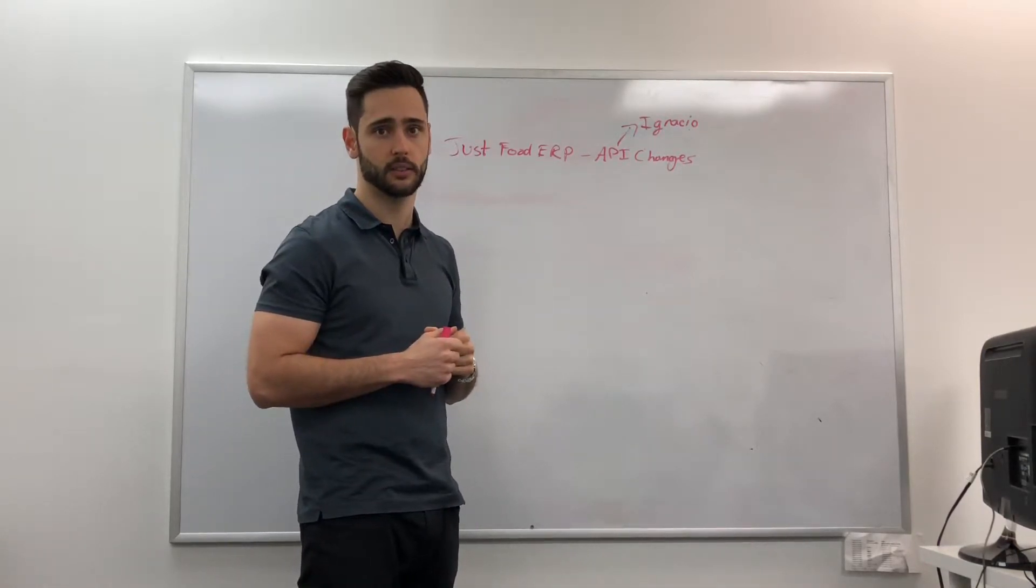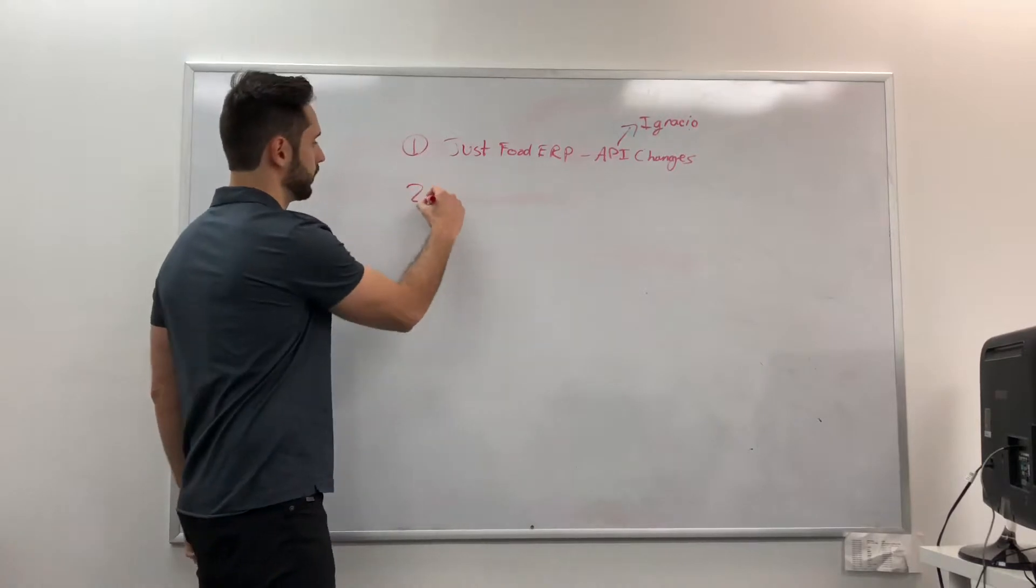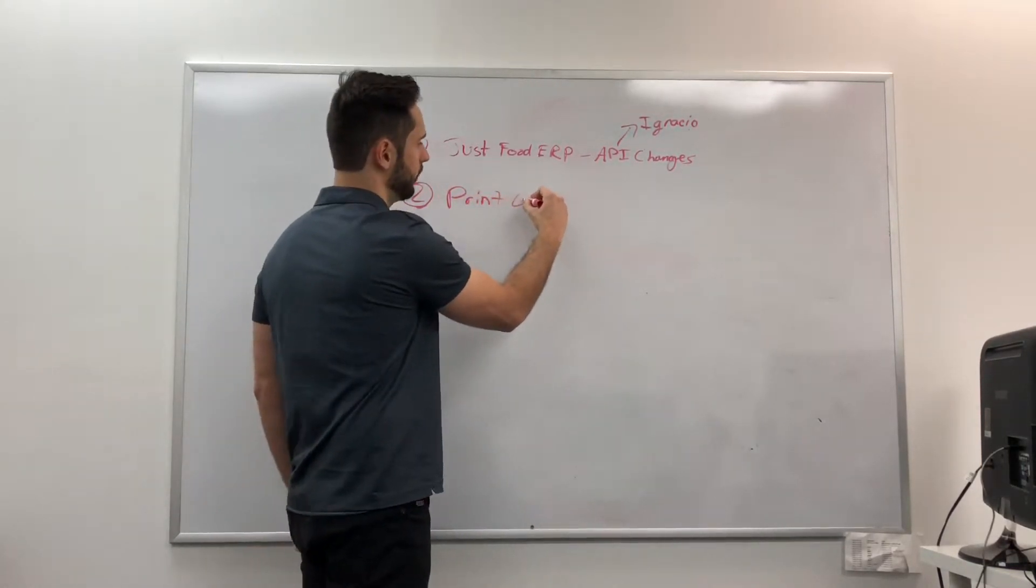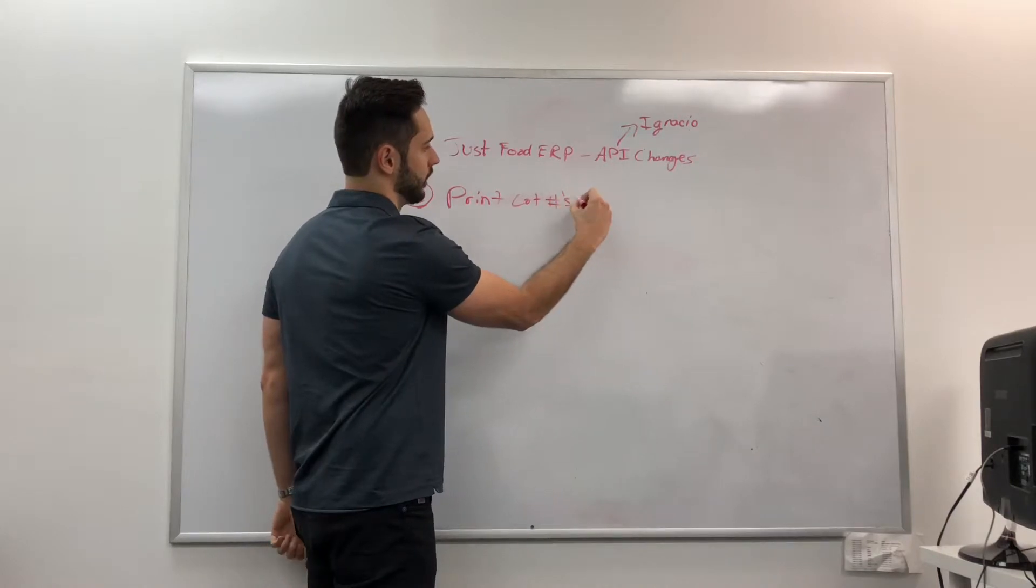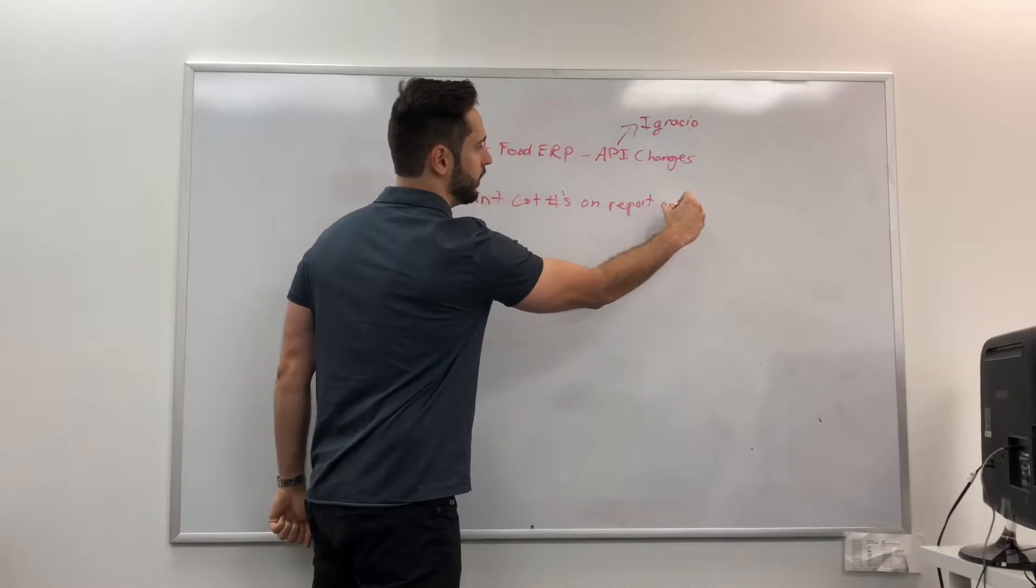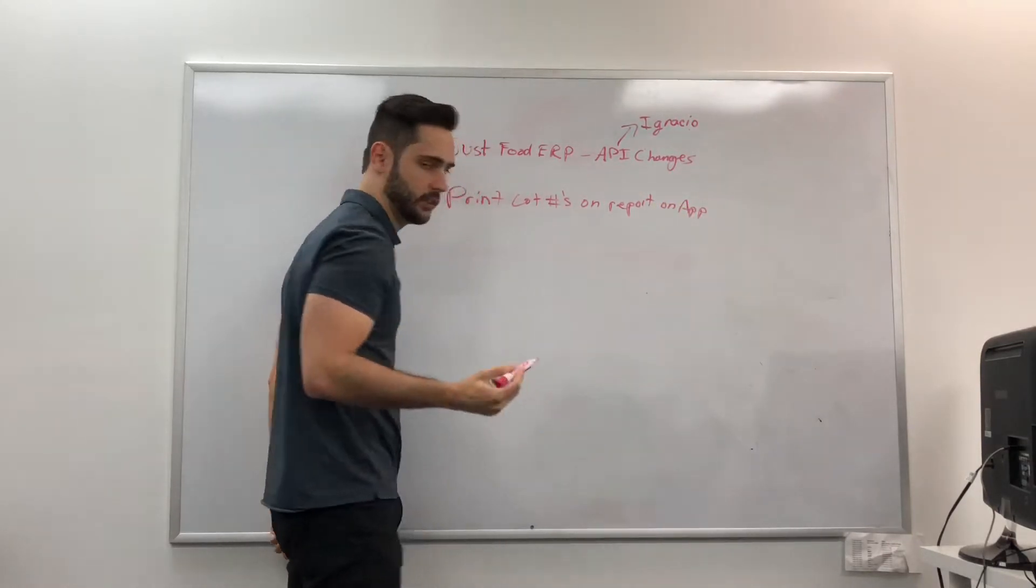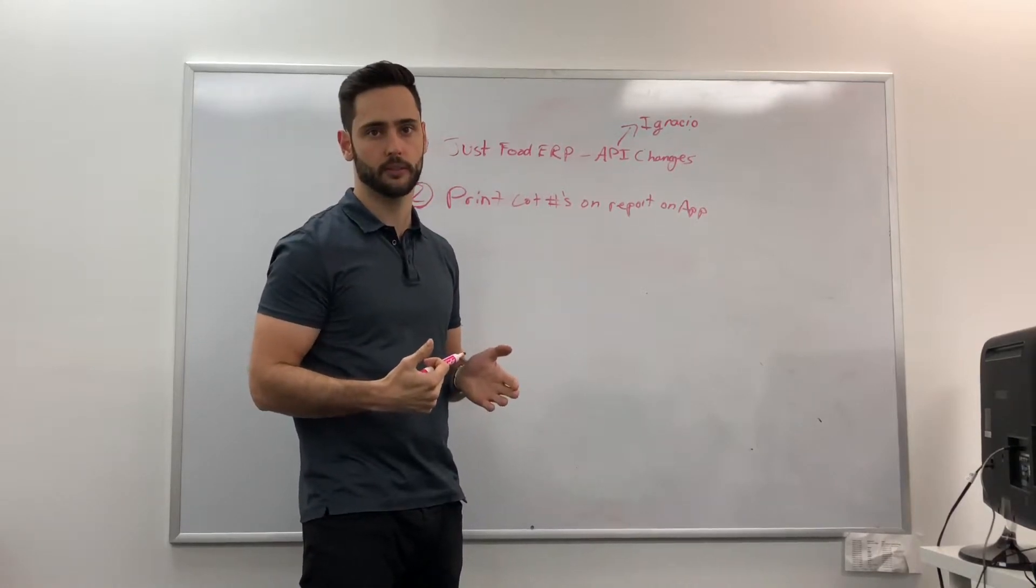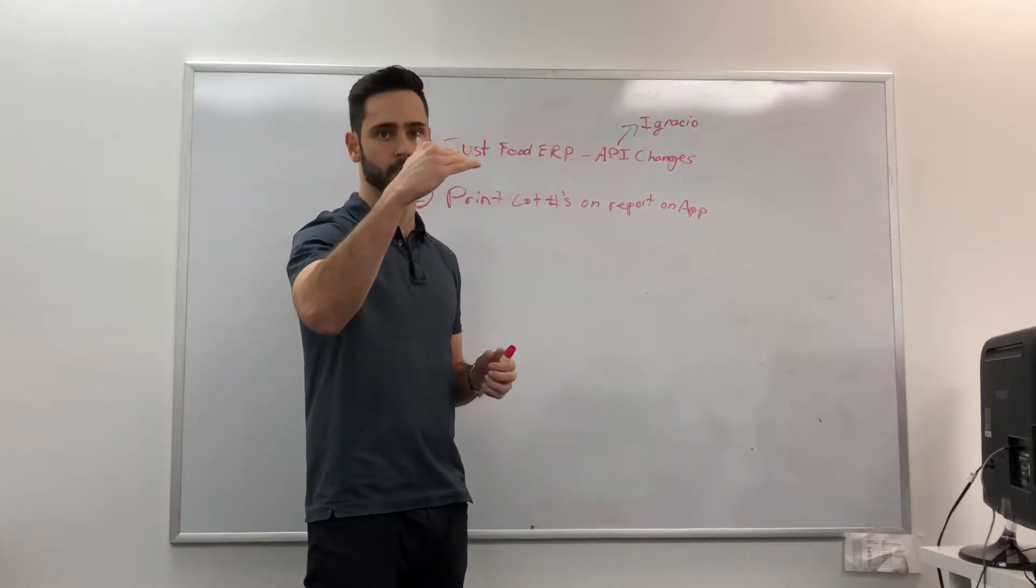Point number two: they need us to print the lot numbers on the report—on the app, the inventory report. So you know we have reports, inventory, different inventory. It's got the item, and right now...